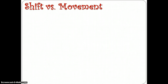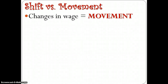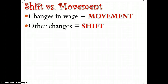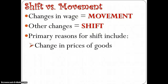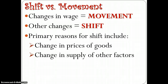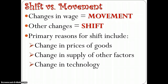Just like all demand curves, there is the issue of shift versus movement. If there's a change in the wage rate, we just move along the demand curve — just like a change in price causes movement along the demand curve. Anything else will cause a shift in the marginal revenue product curve. The primary reasons for shifts include a change in the price of the good itself, a change in the supply of other factors of production, or a change in technology that makes workers more productive.